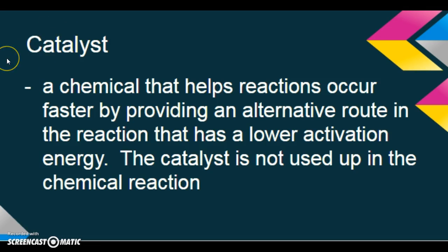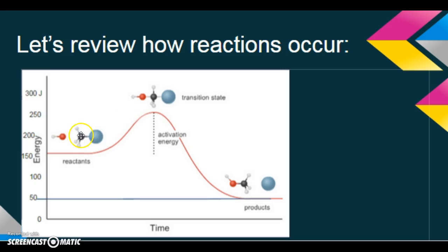So what is a catalyst? A catalyst is a chemical that helps a reaction occur faster by providing an alternative route in the reaction that has a lower activation energy. The catalyst is not used up in the chemical reaction. Hit pause, copy that down, and then we're going to see how that applies to what we've learned.